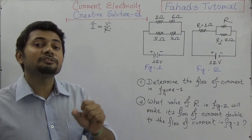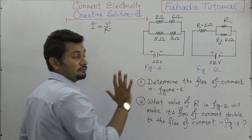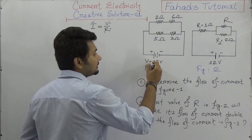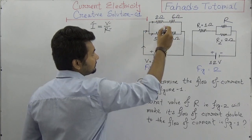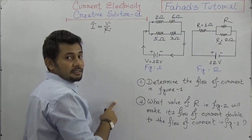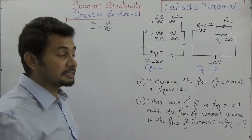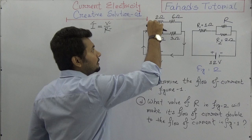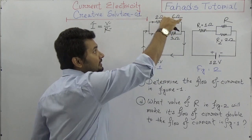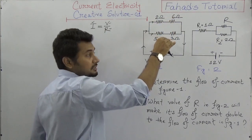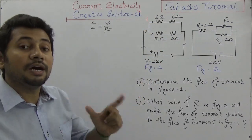The voltage is given as 12 volts. The flow of current will divide into two directions and then come back together — that is the complete circuit. This circuit has four resistances. The first two are in series connection, the second two resistances are also in series connection, and both groups are in parallel connection with each other.